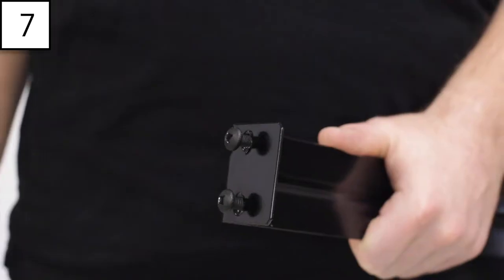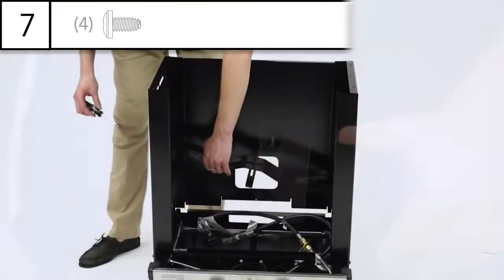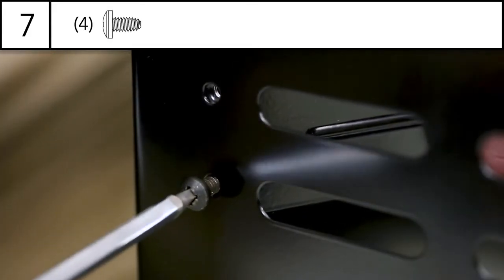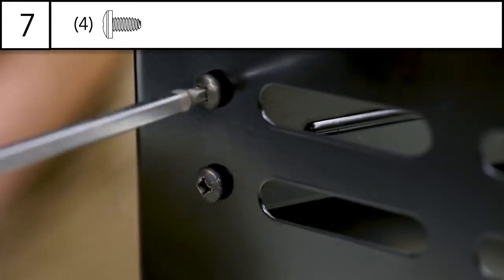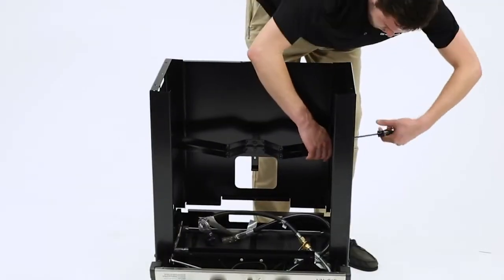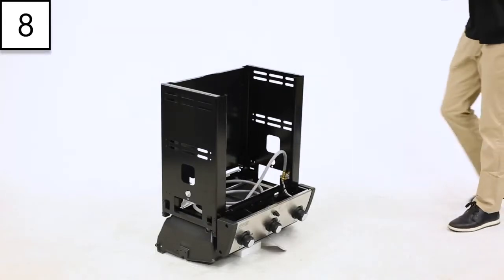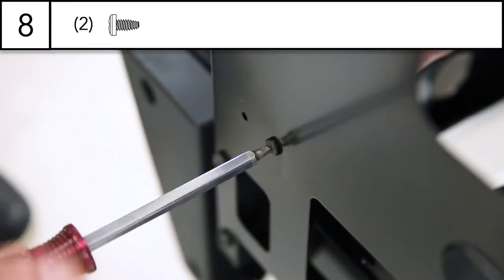Step 7. Install the tank retainer bracket using the two sets of holes at the back of the cabinet assembly. Secure using the four screws provided. Step 8. Secure the hose and the regulator to the front of the left side panel using the two screws provided.